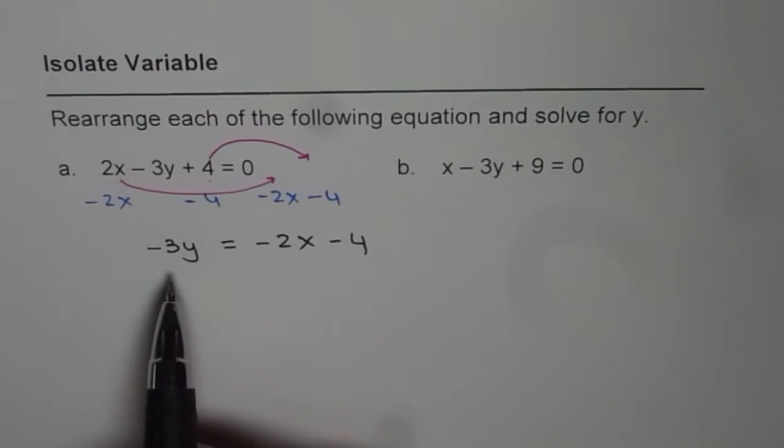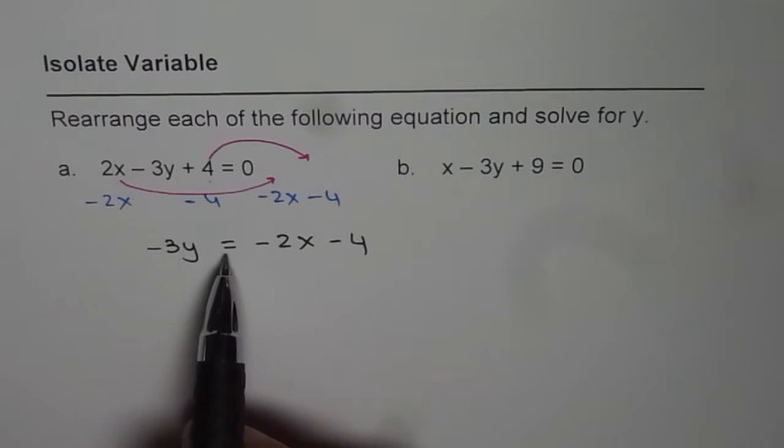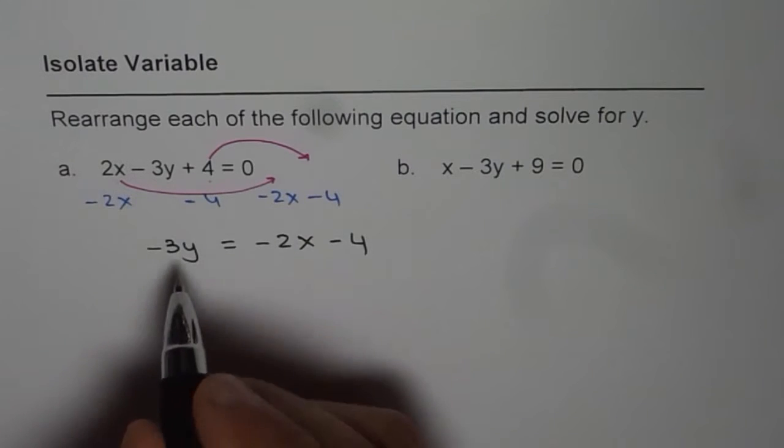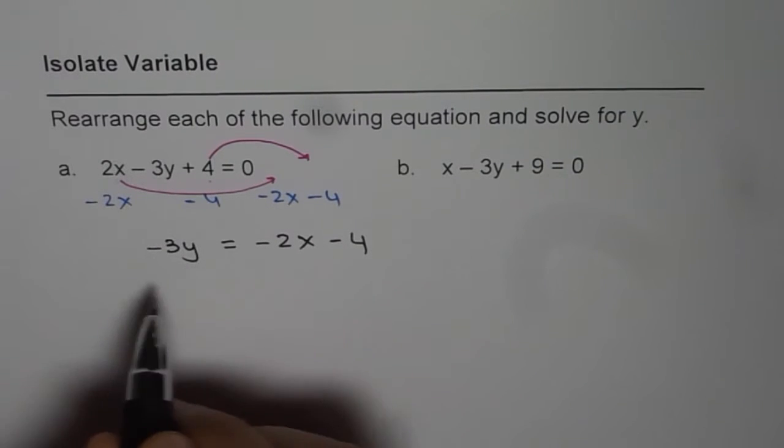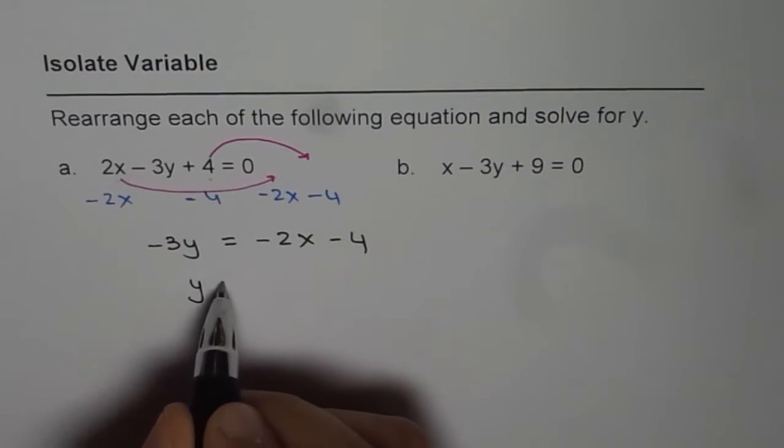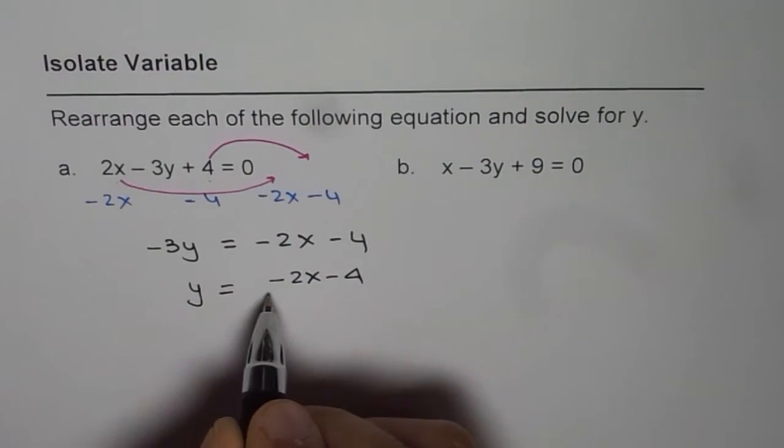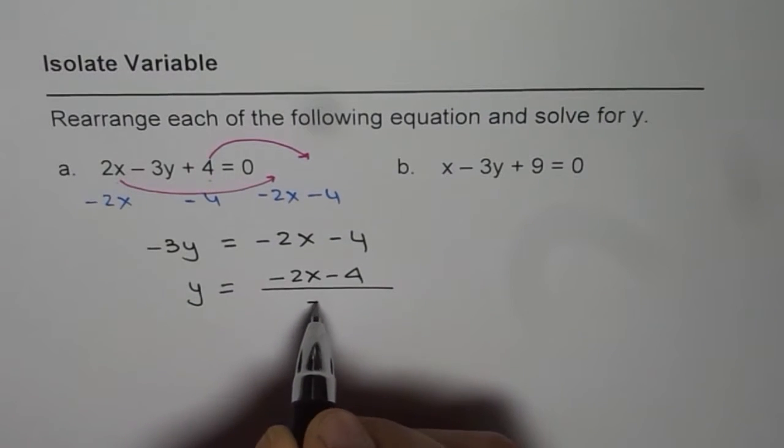Now once we have done this, we have minus 3 times y equals to something, right? So what is y equals to? For that, we need to divide both sides by minus 3. So if we divide, we get y equals to minus 2x minus 4 divided by minus 3.